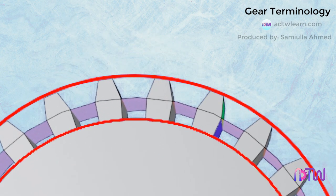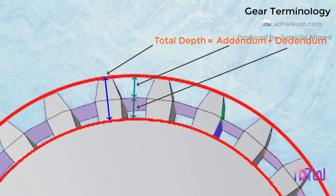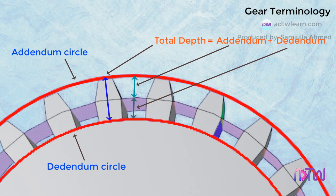Total Depth. The distance from the top land of the tooth to the bottom of the tooth is known as the total depth of the tooth. Total depth can also be given as the sum of the addendum and dedendum of a gear. It is the distance between the addendum circle and the dedendum circle, measured along the radial direction.